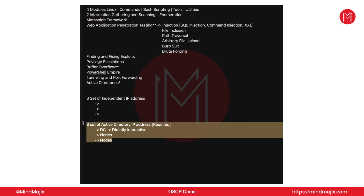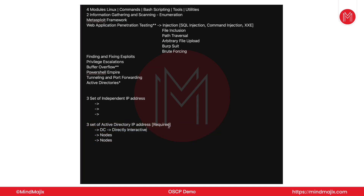The passing mark is 70%, which includes 40 marks for the active directory machine and the rest for other parts. Regardless of what you do, completing the AD set is compulsory. You will be given 23 hours and 45 minutes to compromise these IP addresses, and the next 24 hours will be for you to generate a report which includes each and every possible scenario you went through, including screenshots of successful attempts.